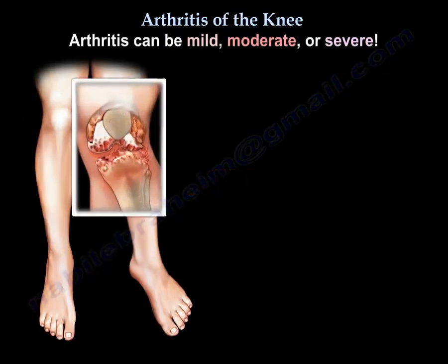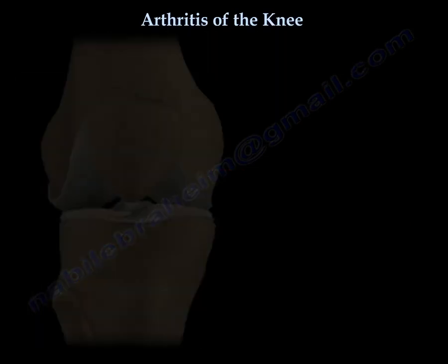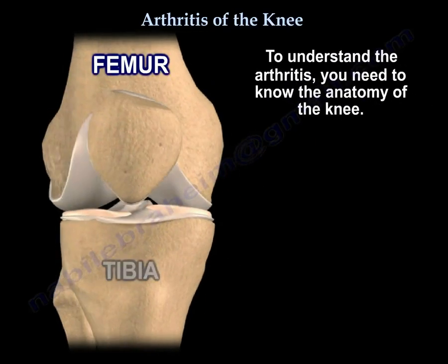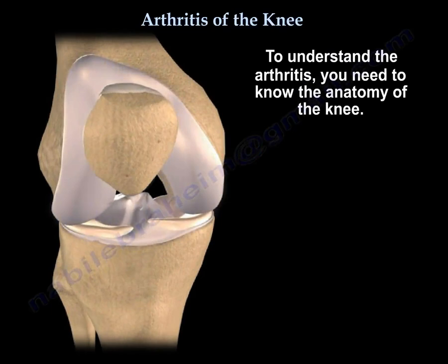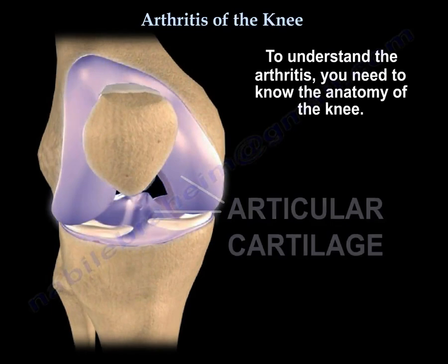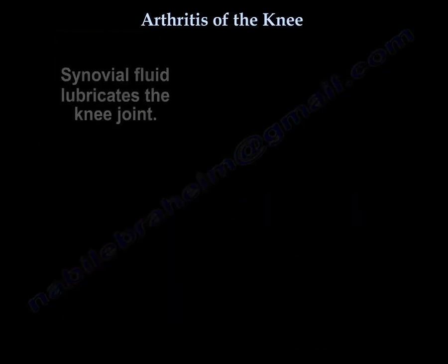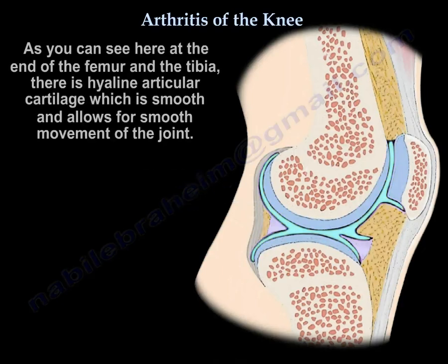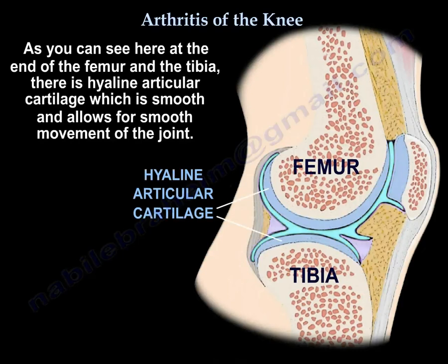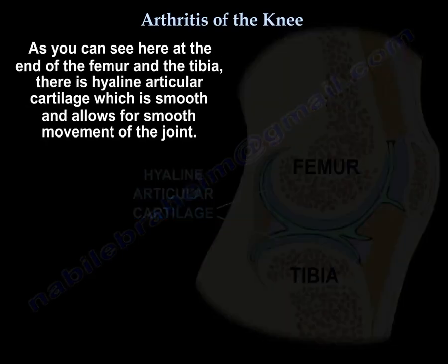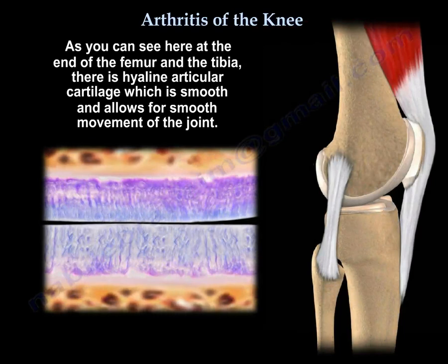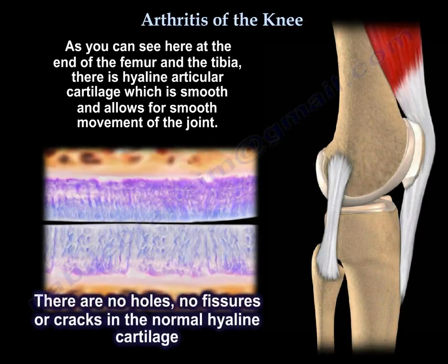Arthritis can be mild, moderate, or severe. To understand the arthritis, you need to know the anatomy of the knee. Here is the femur, the tibia, the patella — which is the kneecap. Here is the cartilage of the knee, and here is the meniscus. There is some synovial fluid that lubricates the knee joint. At the end of the femur and the tibia, there is hyaline articular cartilage, which is smooth, that allows smooth movement of the joint. There are no holes, no fissures, no cracks.